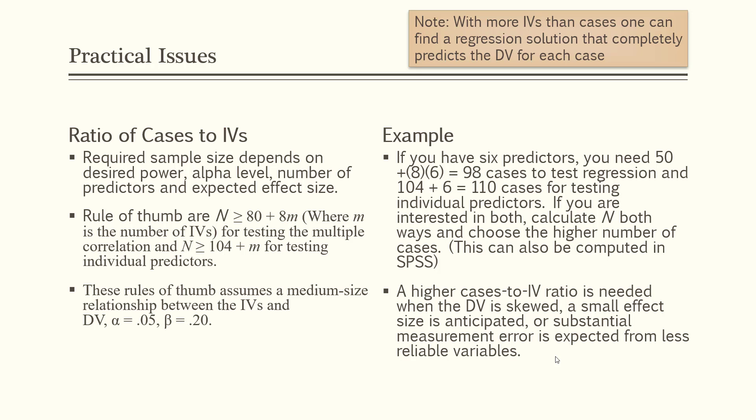A higher cases-to-independent-variable ratio is needed when the dependent variable is going to be skewed, when you're looking at a small effect size — because you need more cases to capture a small effect versus a large one — or when there's substantial measurement error from less reliable variables. These considerations go back into designing the study. It's important to have this done upfront so that when you get your data, you don't find you don't have a large enough sample to come out with valid findings.